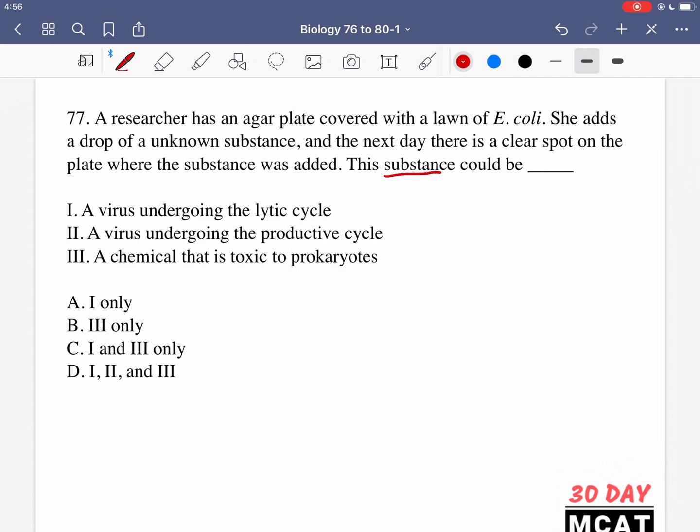And the next day, there's a clear spot on the plate where the substance was added. This substance could be blank. We want to know the type of substance that she added. And when she added it on an agar plate with E. coli, there was a clear spot, meaning that that substance caused the death of E. coli where it was dropped. Which things can cause the death of E. coli? Keep in mind that E. coli is a bacterium.